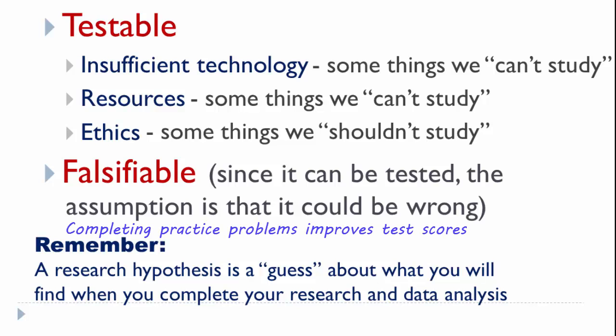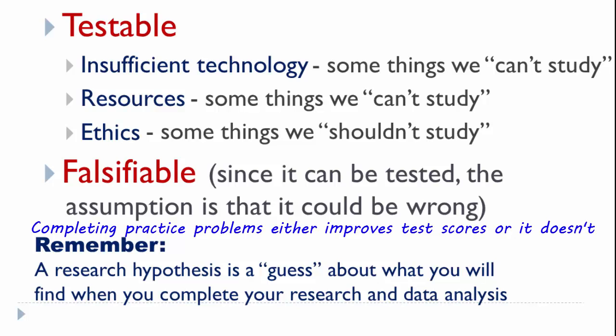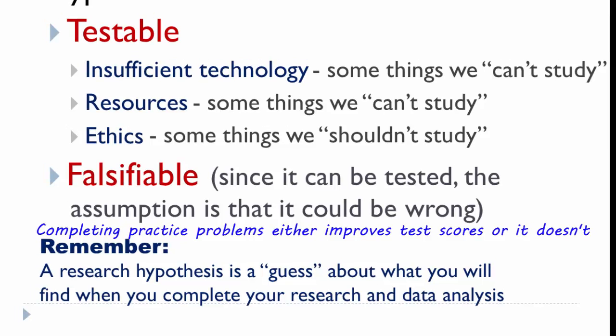For example, completing practice problems improves test scores is a research hypothesis that could be right or wrong. But the hypothesis that completing practice problems either improves test scores or it doesn't isn't a falsifiable research hypothesis because it will always be correct.